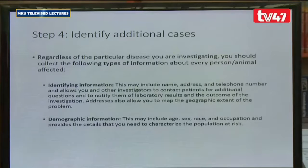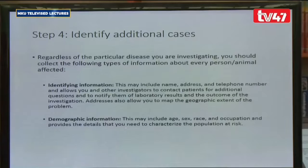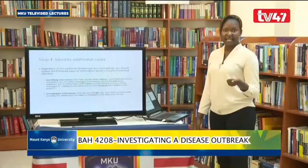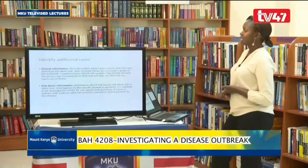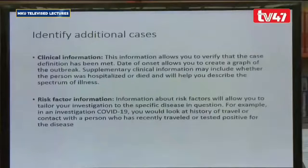Step number four is identification of additional cases. This is where you catch as many cases as possible. Regardless of the disease being investigated, you should collect as much information as possible: identification information such as name, address, and telephone number; demographics including age, sex, race, and occupation — and even hobbies, since people who travel are at higher risk for diseases like COVID-19. You also capture clinical information, which allows you to verify the case definition has been met, including risk factor information.